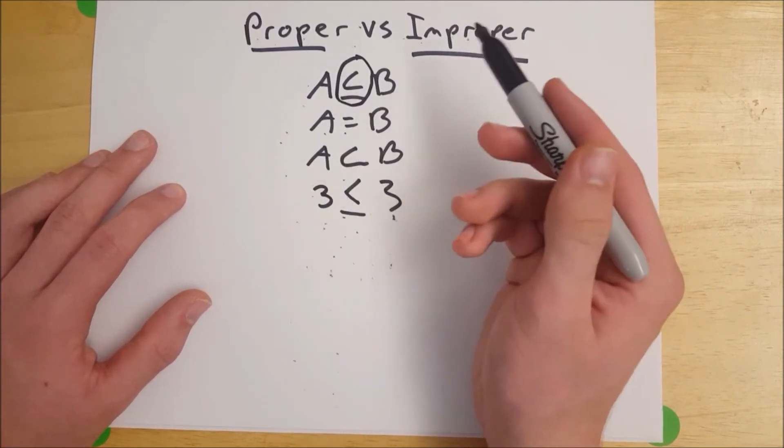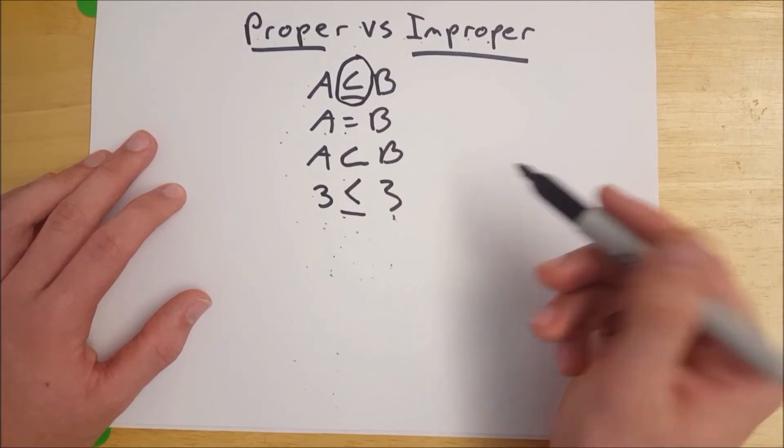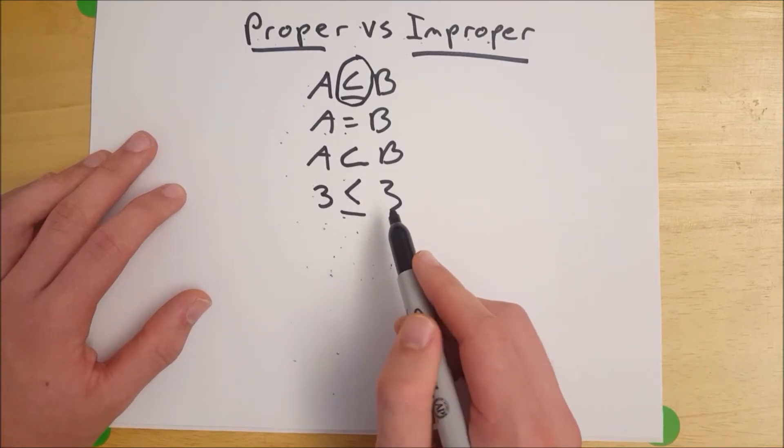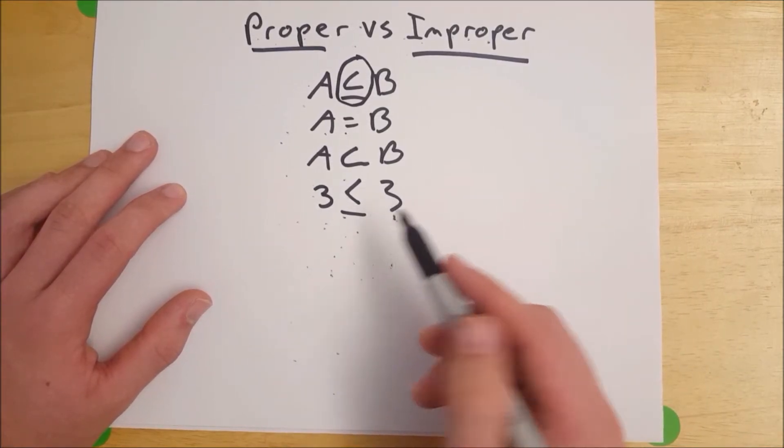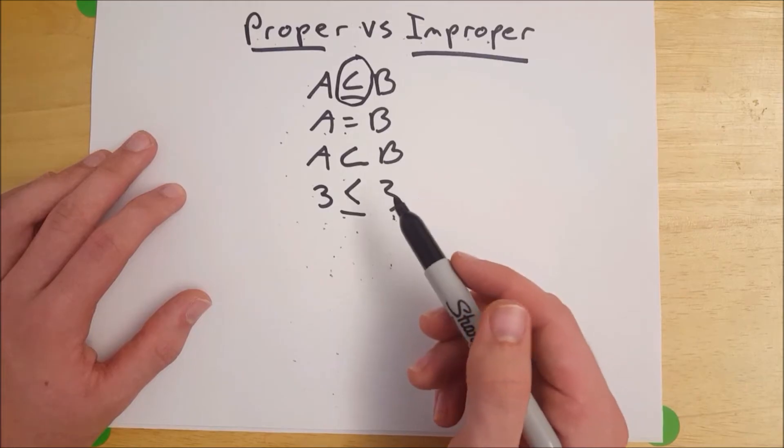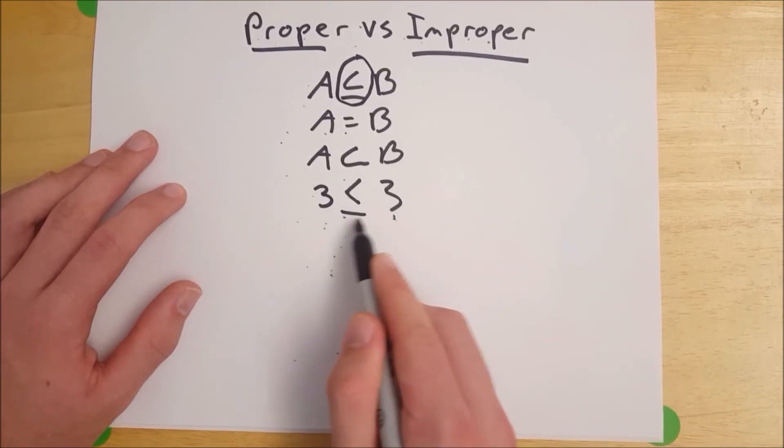It may be a proper subset, it may not be. In the same way that 3 may be less than 3, it may not be. Obviously we know that it is not less than 3, but you get the point what that little line does.